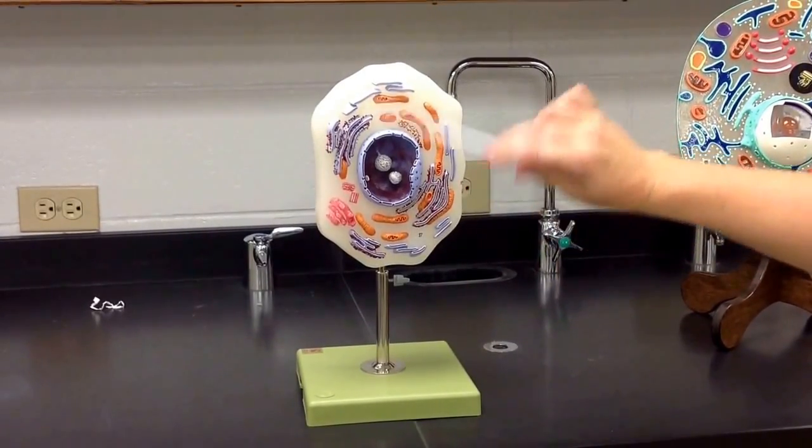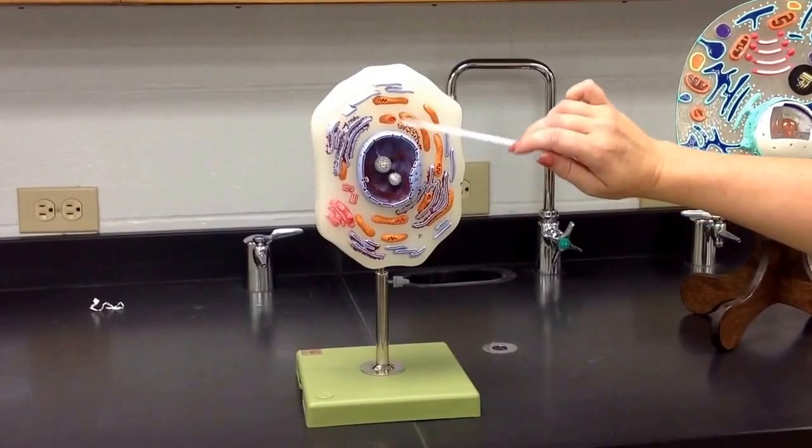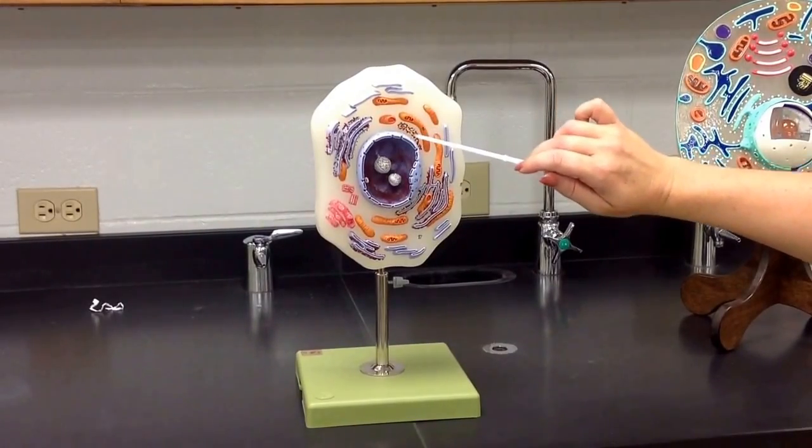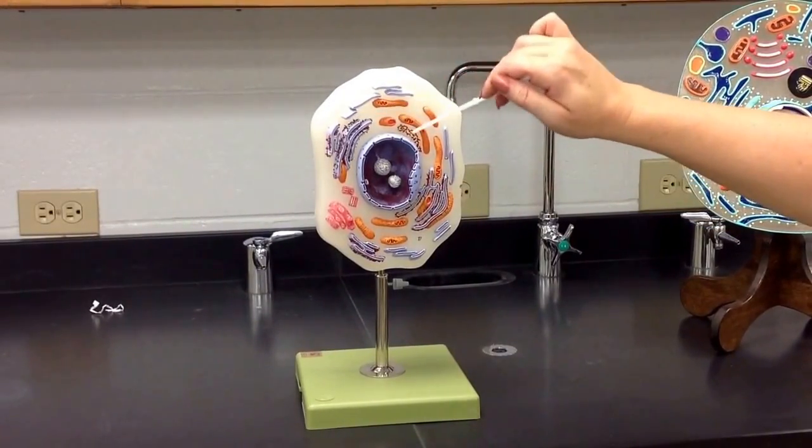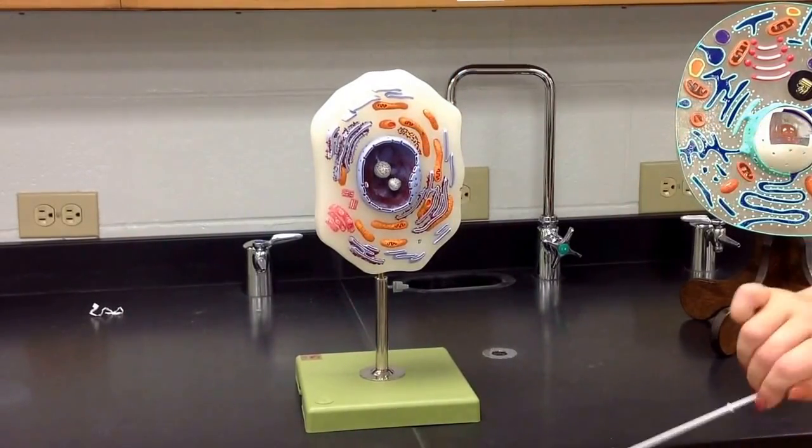And then this model does not show lysosomes, but it does show the ribosomes here off to the surface. The free-floating ribosomes, see they look the same as these, they're just not on the endoplasmic reticulum. So these are your little free-floating ribosomes that you see there.